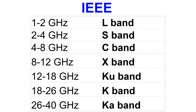Typically C band, X band, and Ku band signals are down converted to L band. Note that LNA is different, as it only amplifies and does not down convert RF signals, while LNB, LNC, and LND are all the same.